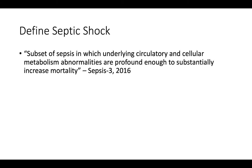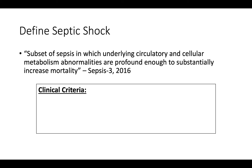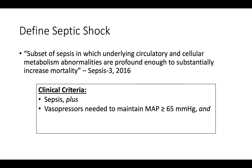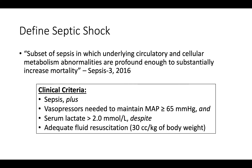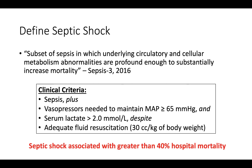Moving on to septic shock: Sepsis 3 defines septic shock as a subset of sepsis in which underlying circulatory and cellular metabolism abnormalities are profound enough to substantially increase mortality. Clinically, septic shock is defined as sepsis plus vasopressors needed to maintain a MAP greater than or equal to 65, and a serum lactate greater than 2, despite adequate fluid resuscitation — here defined as 30 cc per kilogram of body weight. Basically, septic shock is sepsis plus hypotension after appropriate fluid resuscitation. From the Sepsis 3 guidelines, meeting all of these criteria is associated with greater than 40% hospital mortality.